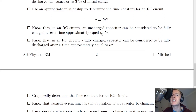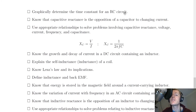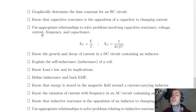In an RC circuit, an uncharged capacitor can be considered fully charged after approximately 5τ, and a fully charged capacitor can be considered fully discharged after approximately 5τ. You should also be able to graphically determine the time constant from a charging or discharging graph of voltage against time. Capacitive reactance is defined as the opposition of a capacitor to changing current. Use appropriate relationships involving capacitive reactance Xc, voltage, current, frequency, and capacitance: Xc equals V over I, and Xc equals 1 over 2πFC.